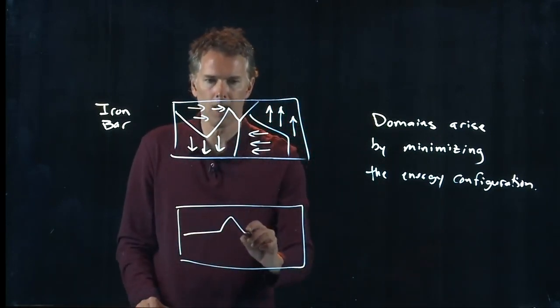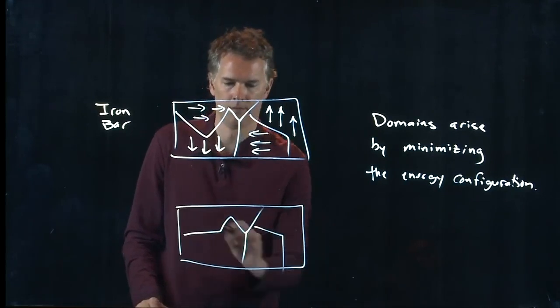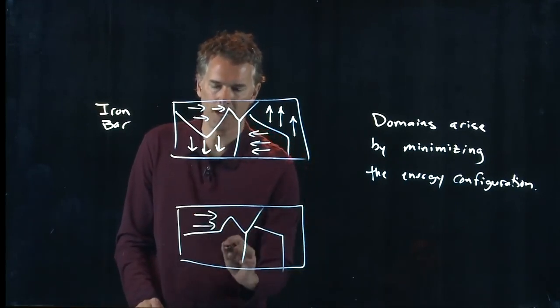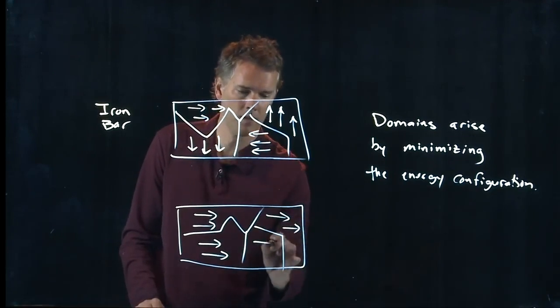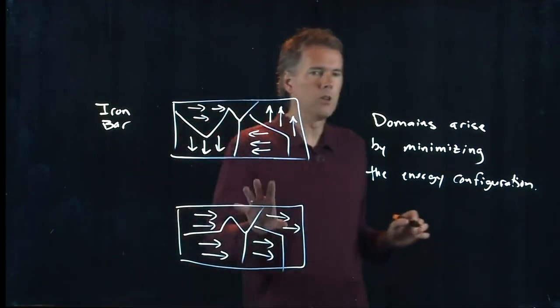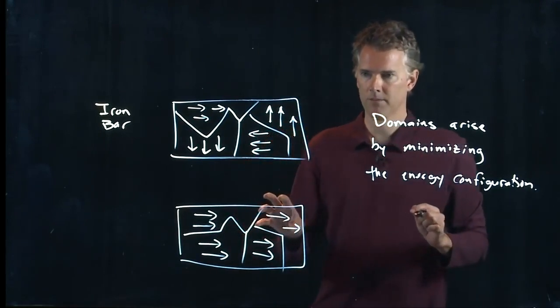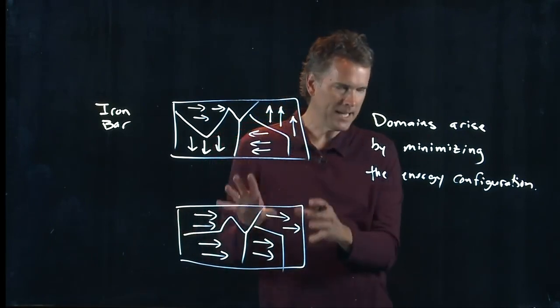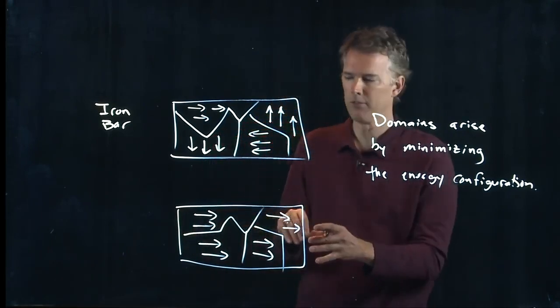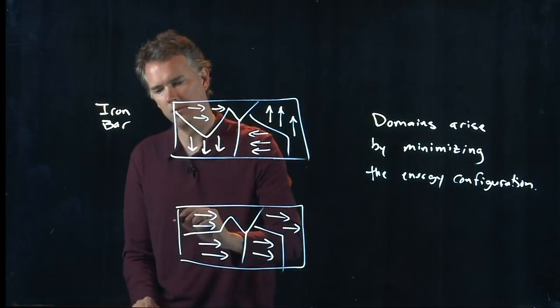But what it does tell you is when all these things are aligned, like we put it in a magnetic field and align all of them, this is no longer the minimum energy state. This is some higher energy state and it doesn't like to be in there. And so how do you get it back to this disordered state?